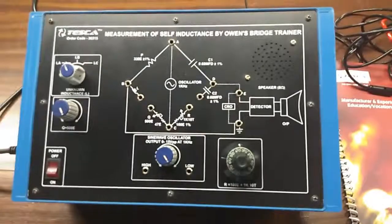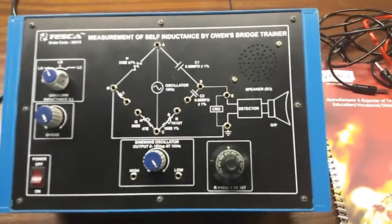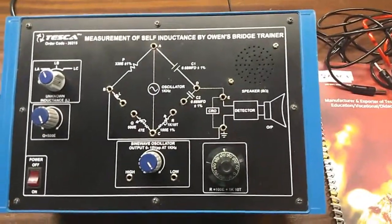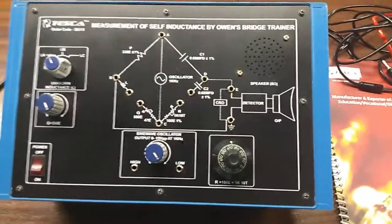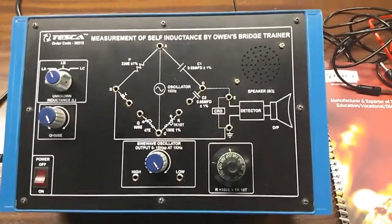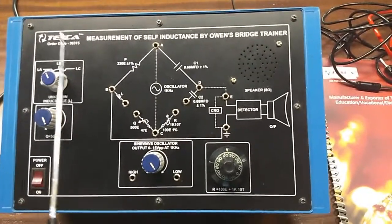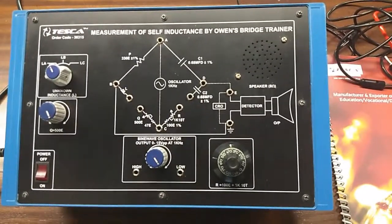Today we are going to show you our measurement of self-inductance by Owen's Bridge Trainer Kit. The order code is 36315.